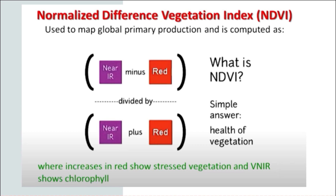Because we're using the near infrared band and red band both above and below in the formula, using this type of indexing we can look at the condition of the vegetation and whether it's struggling from some kind of stress. The whole point of vegetation index is to assess the vegetation of an area, and we're doing that by analyzing the images.